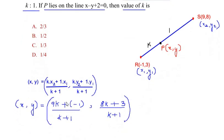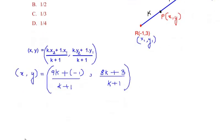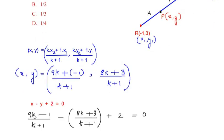So we are going to substitute the values of x and y which we got using the section formula in the given equation of the line. We get (9k-1)/(k+1) - (8k+3)/(k+1) + 2 = 0.